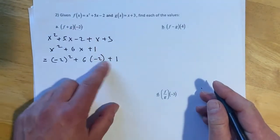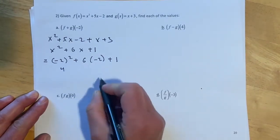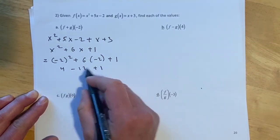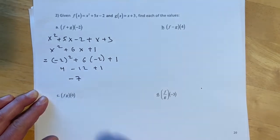So there we are, just putting negative 2 in for everything. So this will be 4 minus 12 plus 1, or 5 minus 12, so that should be negative 7.